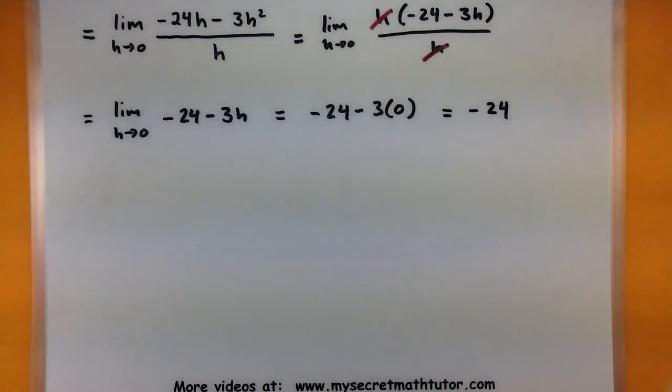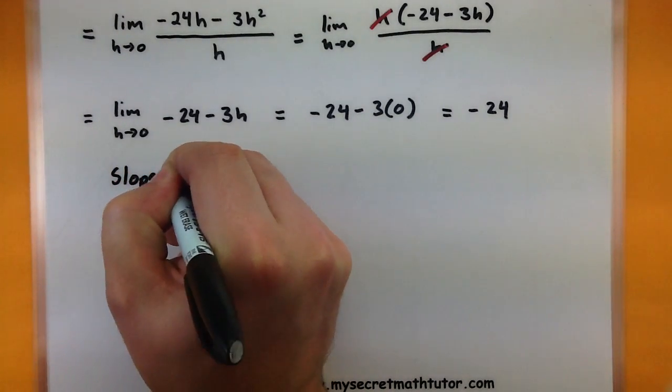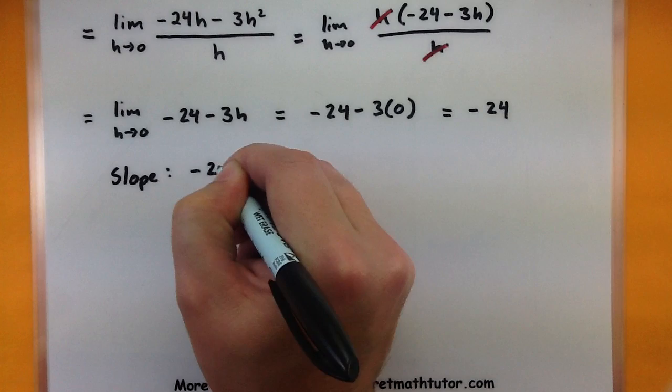Okay, now that's a lot of work just to get us to this point, and we have to kind of take a step back and say, okay, what did we just find? All of this work was just to find the slope of that tangent line. So somewhere we'll go ahead and write down that the slope is a -24.